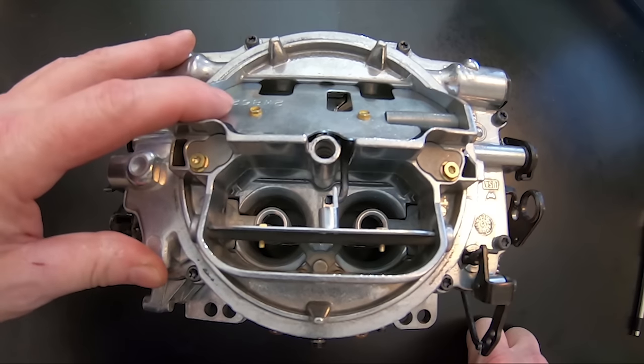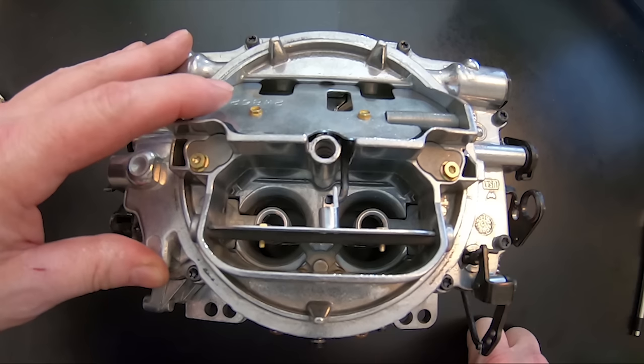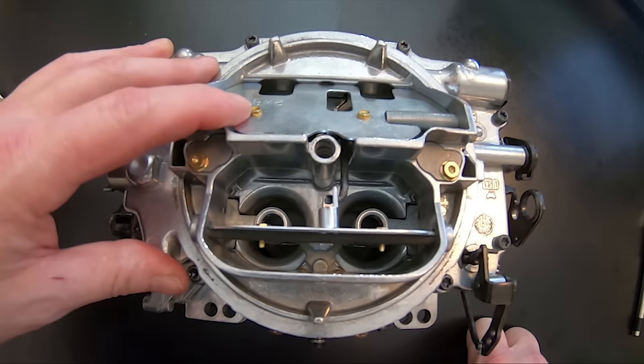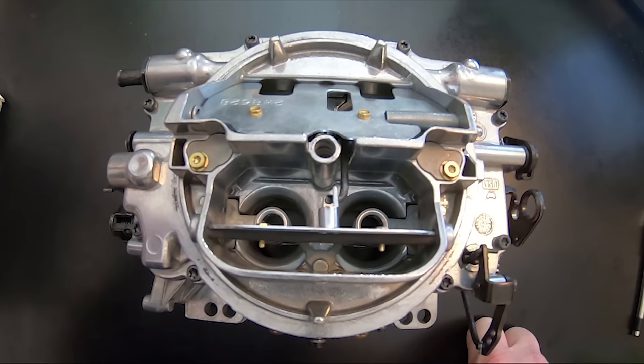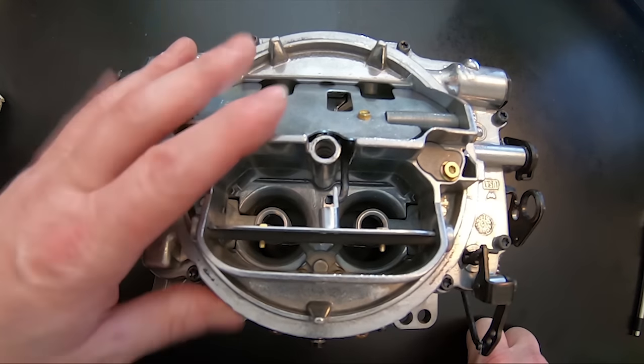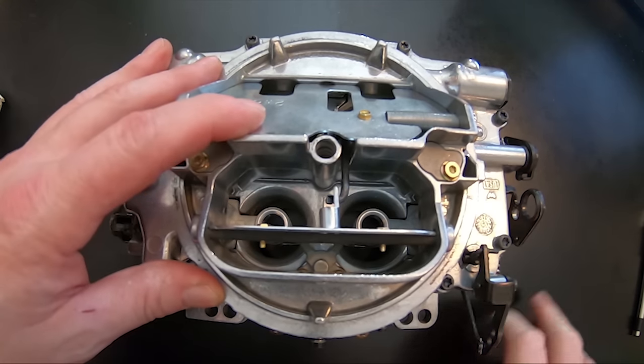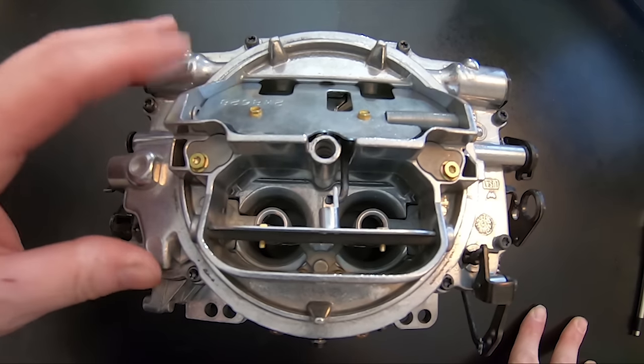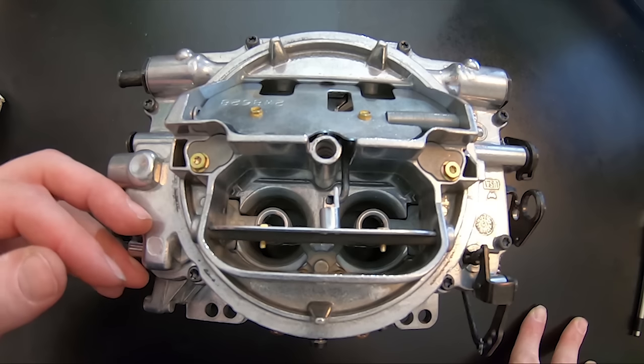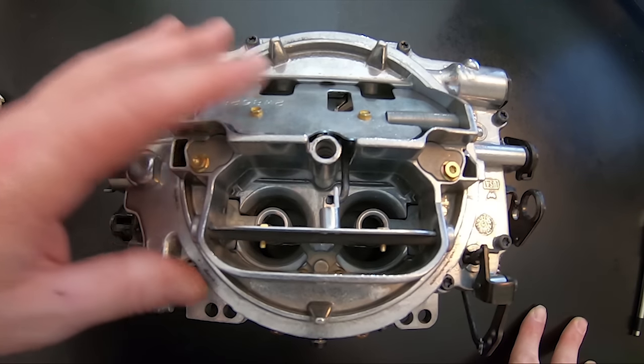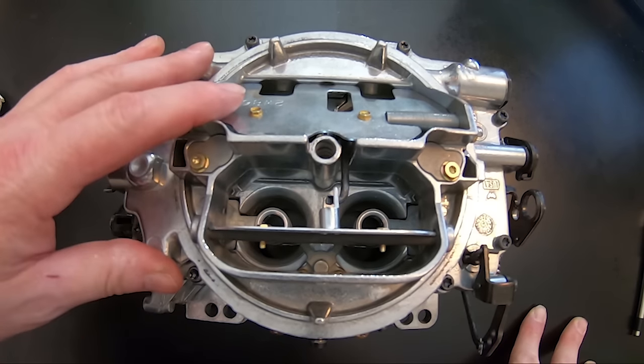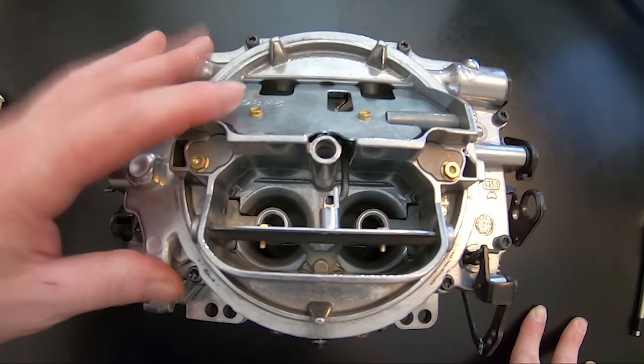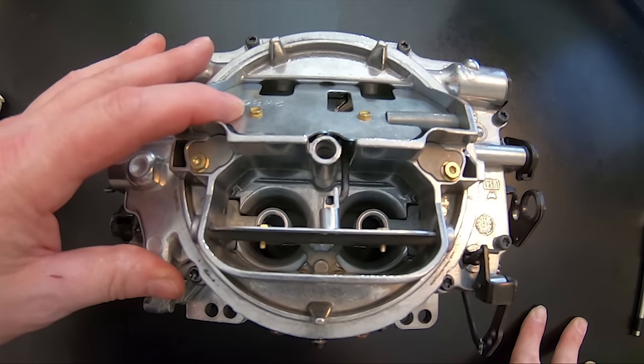Now, Edelbrock will show you within their book how to adjust the float level to where the factory setting is. If you adjust the float lower and lower the amount of fuel that you keep in the carburetor, you will certainly help it not have as much in there to boil. So dropping the fuel level in there and running that spacer will help out that situation where sometimes you get into that boiling situation with a carburetor.